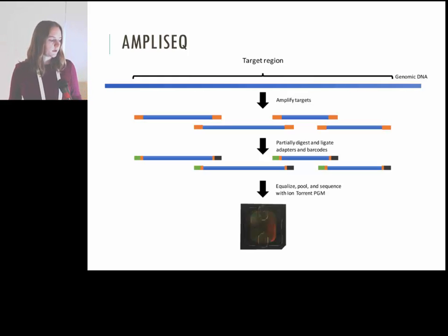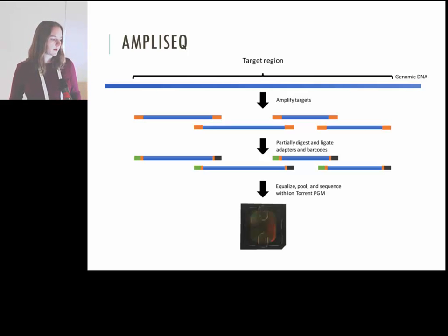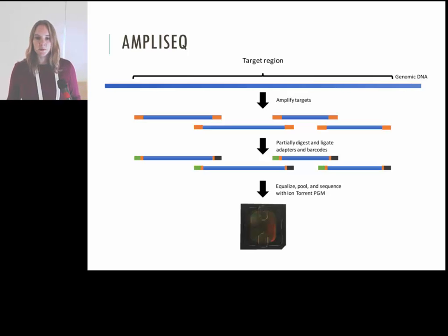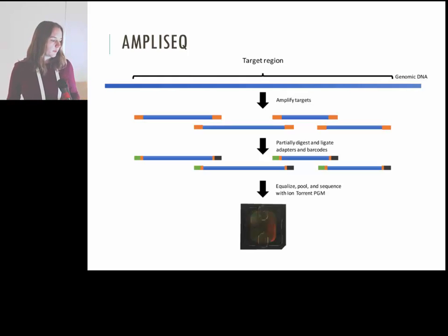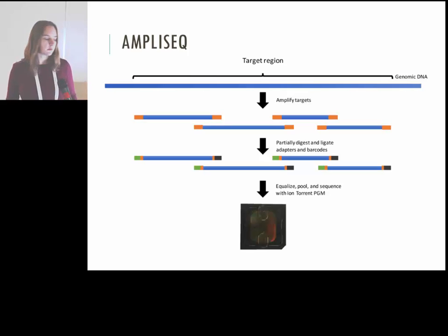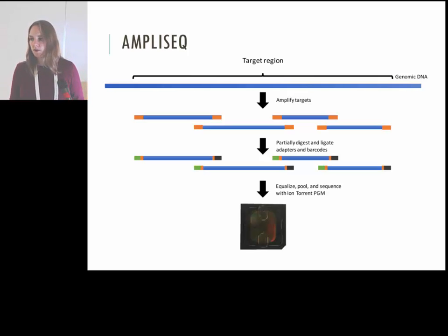We put those target regions into the AmpliSeq designer. We designed our primer pool around the time the maize genome just came online for AmpliSeq, using their website. The amplicons are tiled across the target region. We did half reactions with one pool of 159 amplicons and another of 160, then pooled those back together after the initial amplification phase. After amplifying the targets, you partially digest, ligate the adapters and barcodes. We multiplexed 192 samples together and sequenced with the Ion Torrent PGM using the 318 chip.